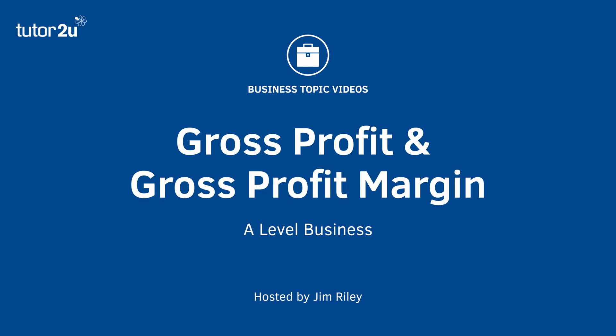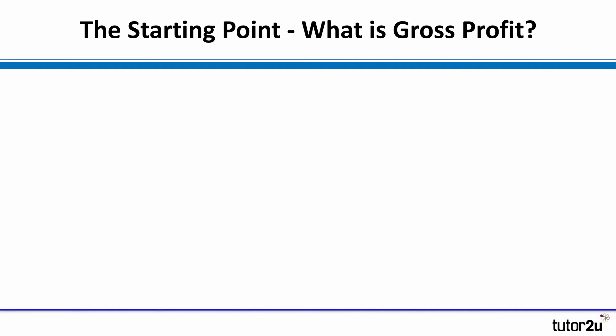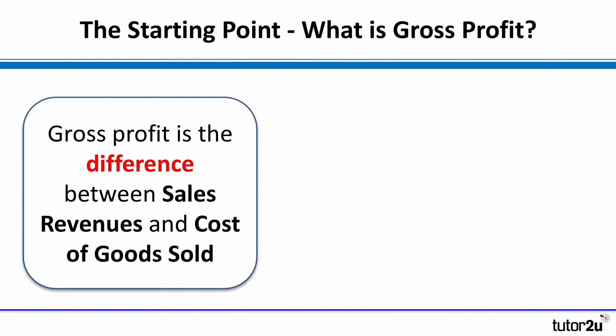Hi there. Let's take a look at a really important measure of profit and profitability — the gross profit and the associated gross profit margin. The starting point for calculating gross profit margin is gross profit. So what is it? Well, it's the difference between the sales revenues that we earn and the specific costs of those sales revenues, the so-called cost of goods sold.